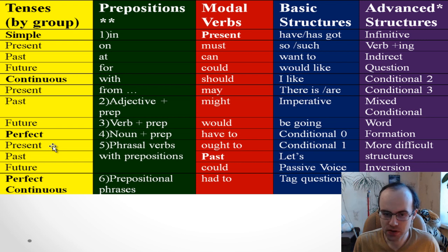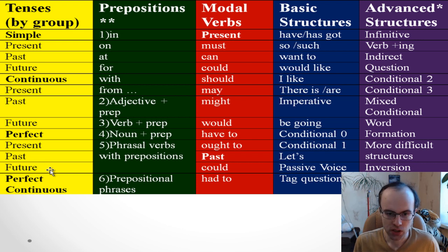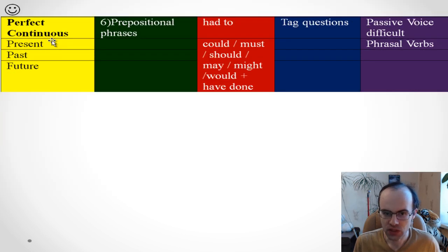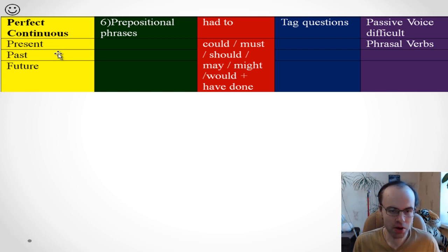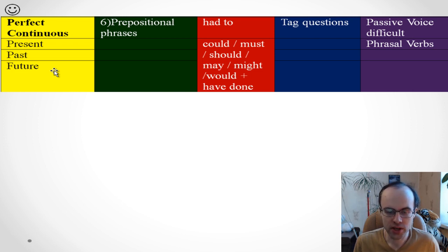Perfect tenses — present perfect: 'I've just visited this place.' Past perfect: 'He said that he had learned that rule.' Future perfect: 'We'll have finished this project by next year.' Present perfect continuous: 'I've been learning English for about two years.' Past perfect continuous: 'When I came home, he'd been using the internet for about two hours.'